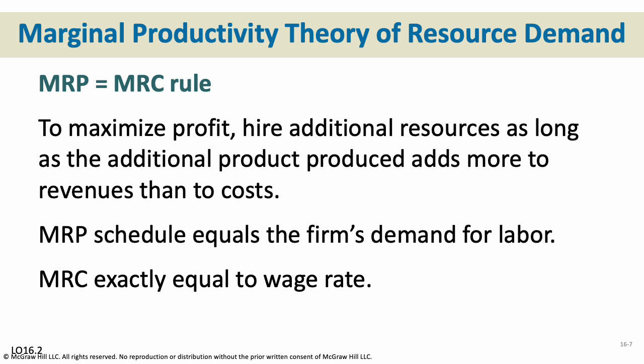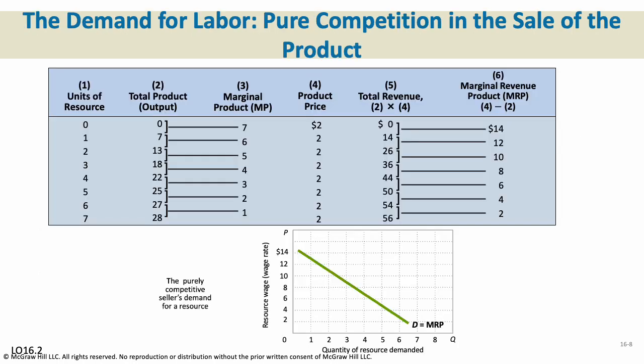The marginal revenue product schedule is your firm's demand for labor, and marginal resource cost represents your wages — what you're paying your labor. In pure competition, as we increase our units of labor, output goes up as well. However, marginal product decreases — you don't simply make exponentially more things the more people you hire. It becomes diminishing returns, just like anything else.